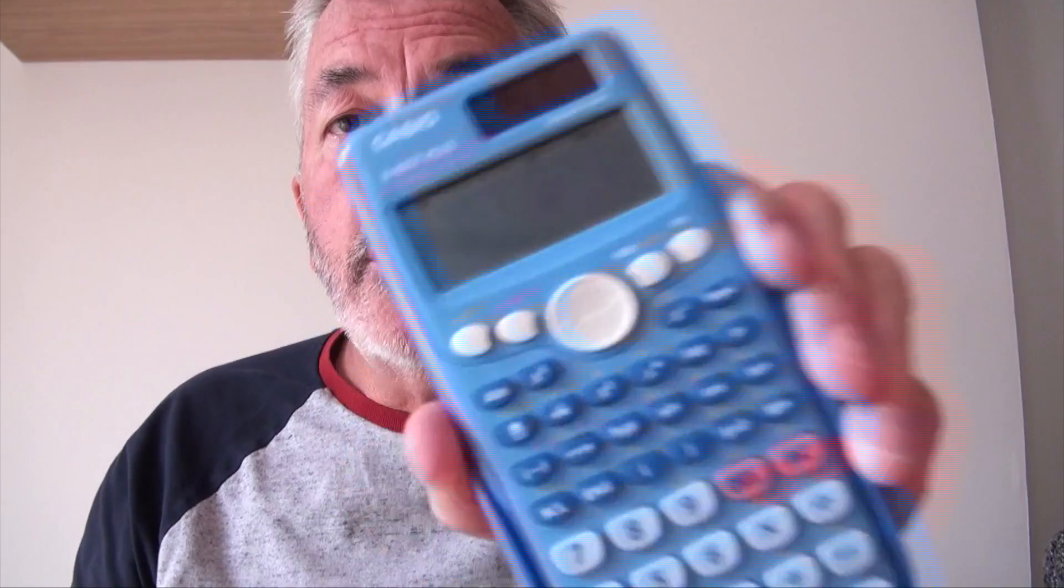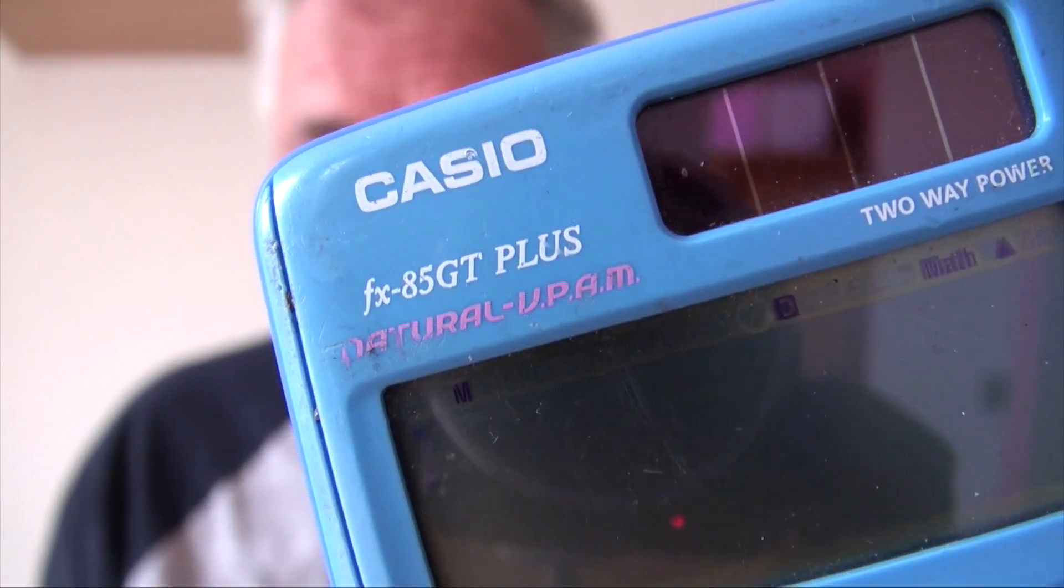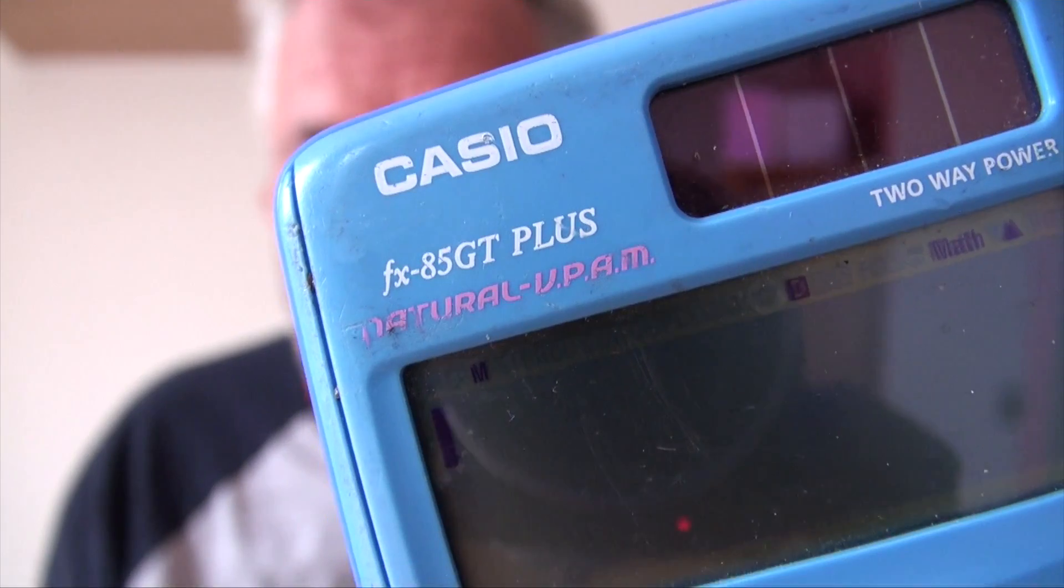Right, I'm having a rant. For years and years I have used this calculator, there it is. It's a Casio FX85 GT Plus, solar powered. That's what makes it an FX85. If it's not solar powered, it's FX83. Anyway, I've used that for 20 years, wonderful.